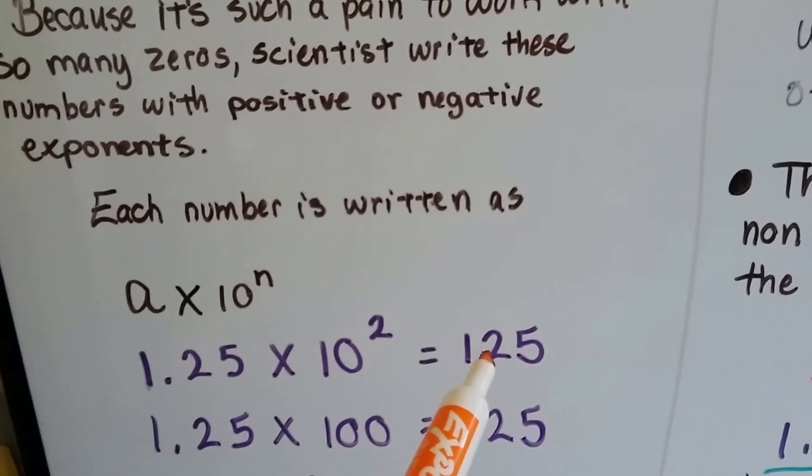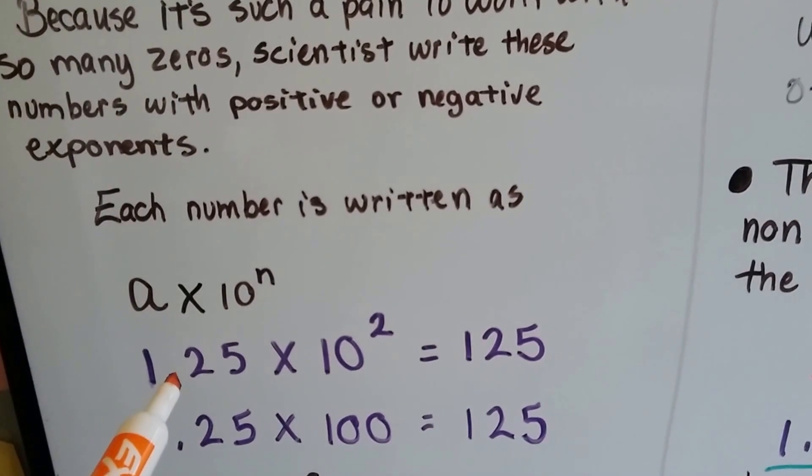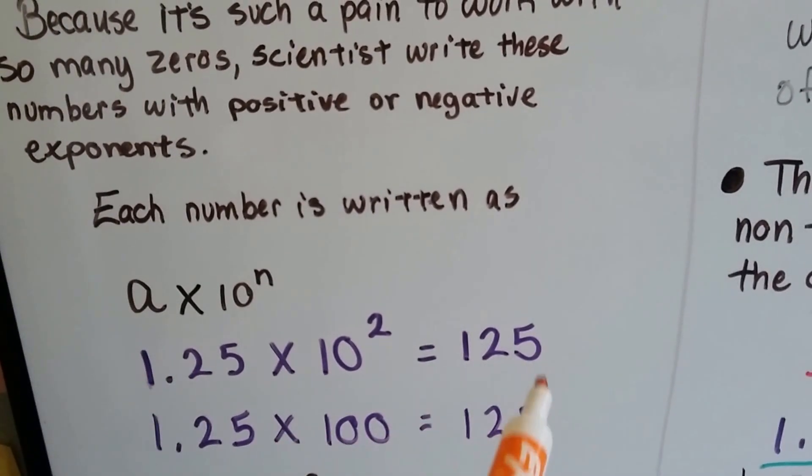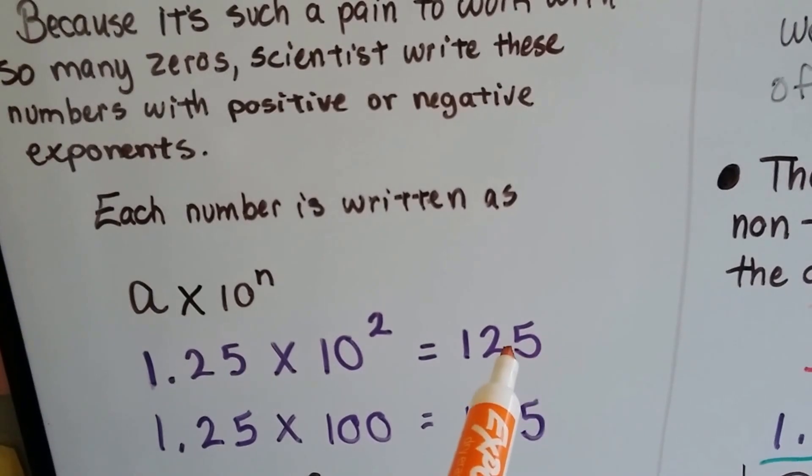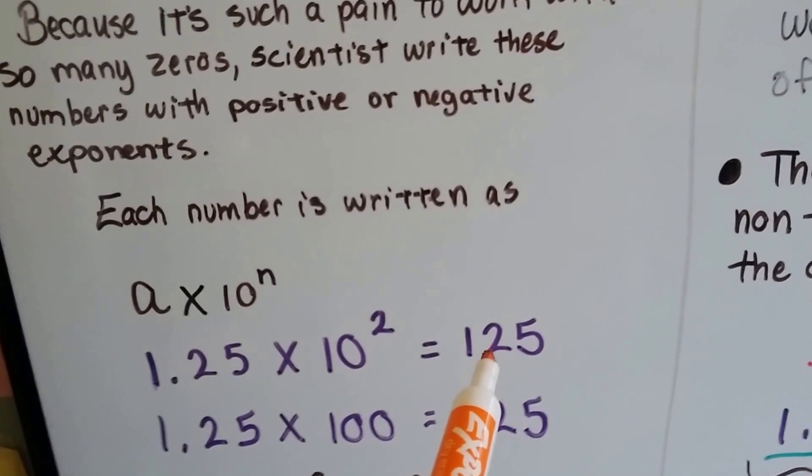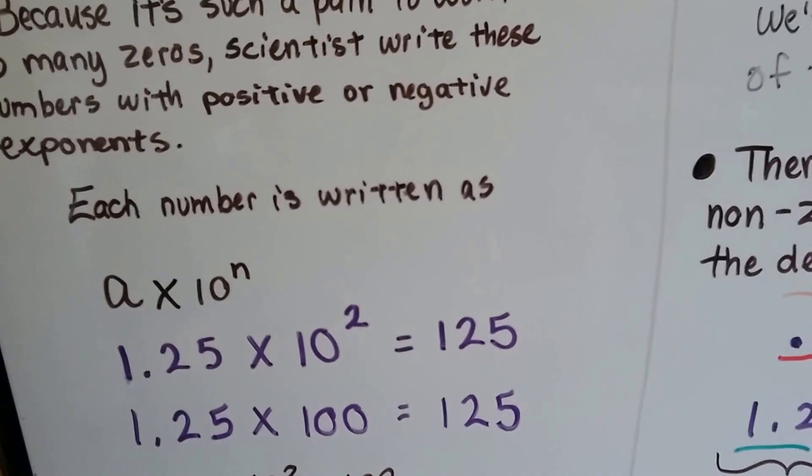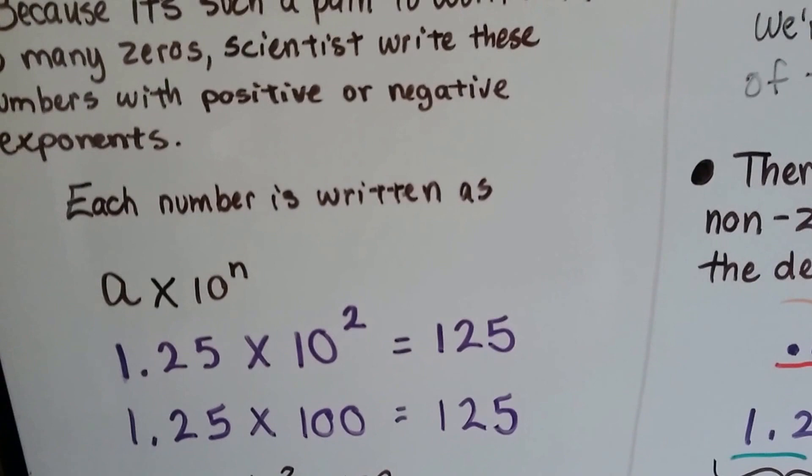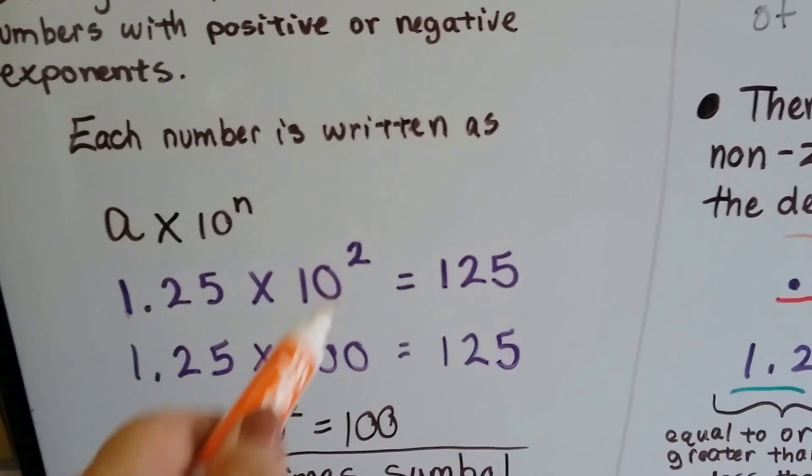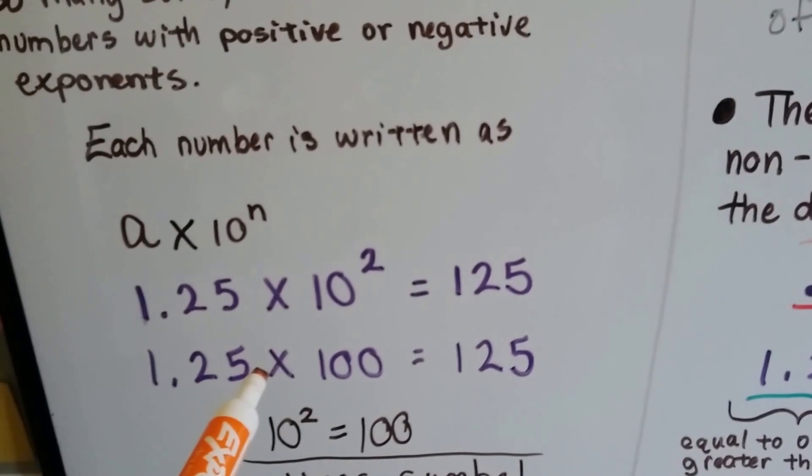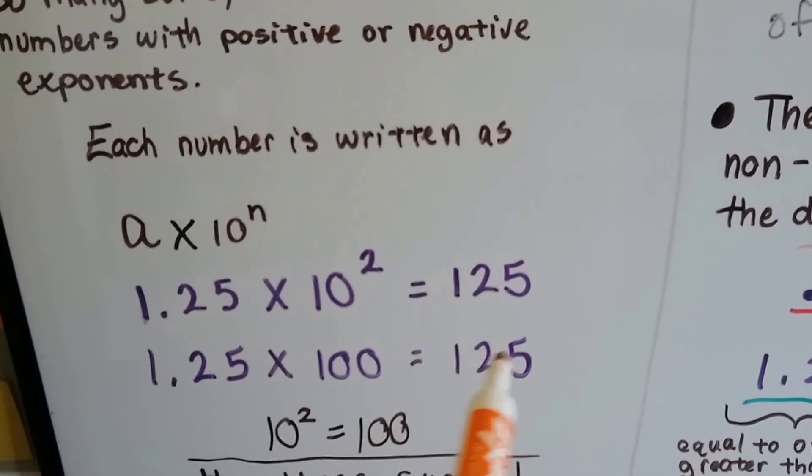If we were writing 125, we'd put the decimal in between the first two digits, between the 1 and the 2. Because we moved it from behind the 5, 1, 2 hops, to in between the 1 and the 2, we'd say it's multiplied by 10 to the second power. That's 2 hops, it's 2 for an exponent. That's 10 times 10, that's 100. That moves the decimal point to behind the 5. That makes it 125.